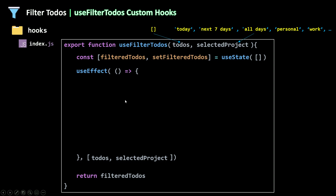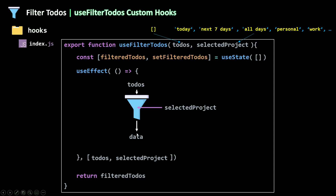All the logic to filter out my to-dos will live inside the effect. We'll take the to-dos as arguments, filter them based on the selected project, get an array called data containing all the filtered to-dos, and then set filteredTodos to that data.